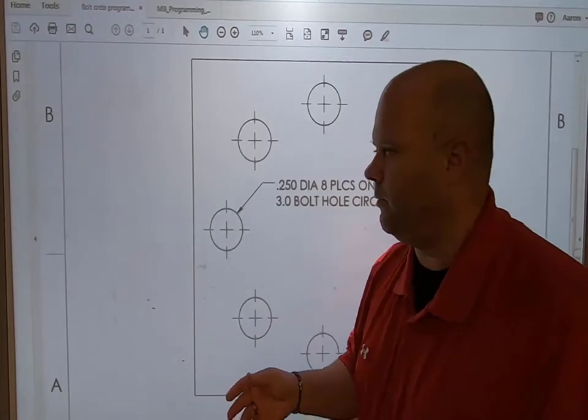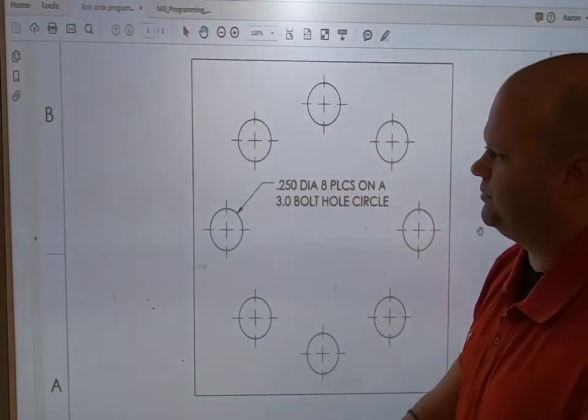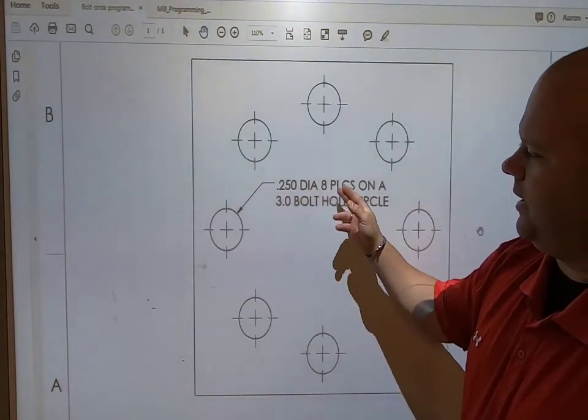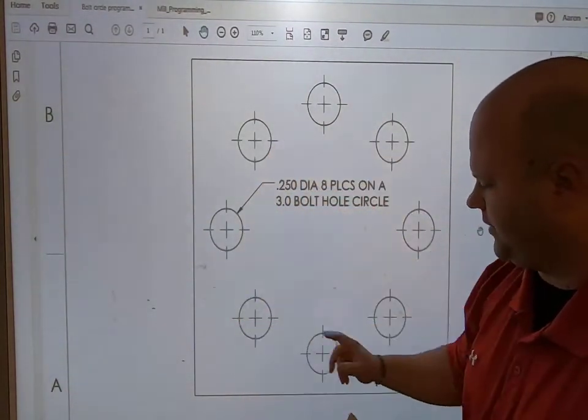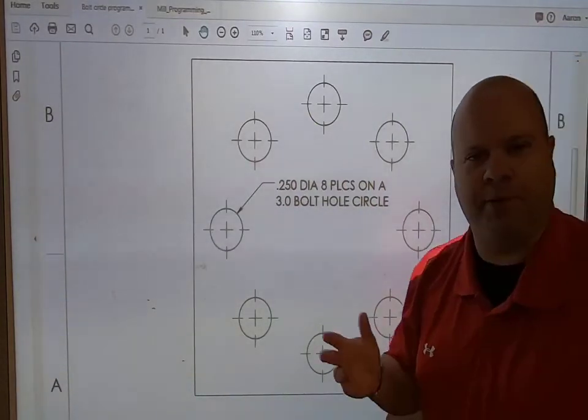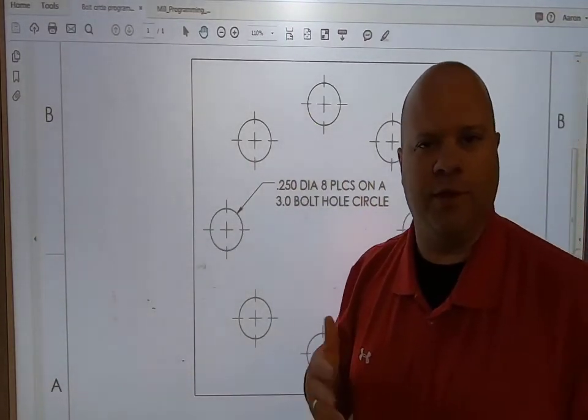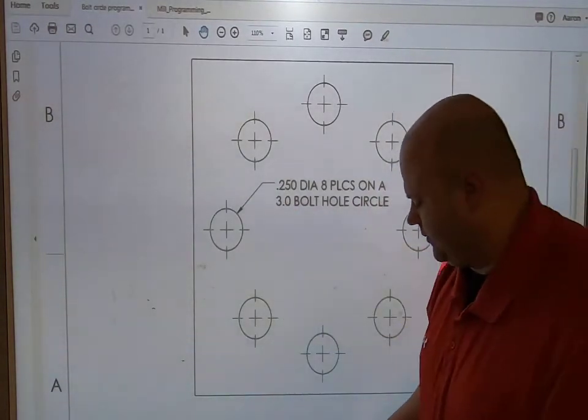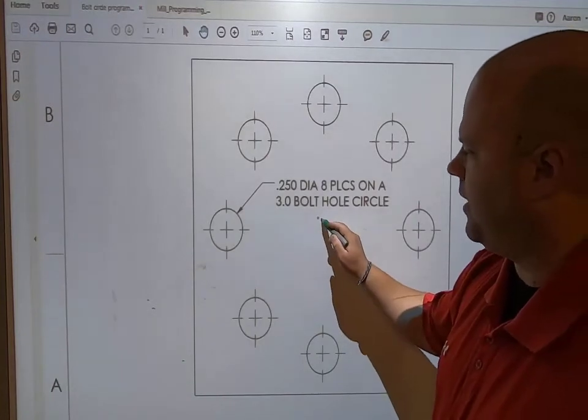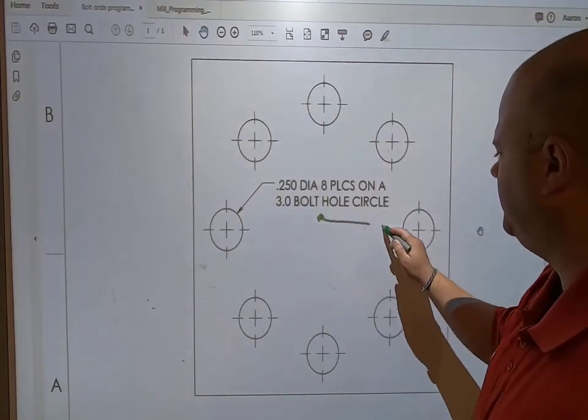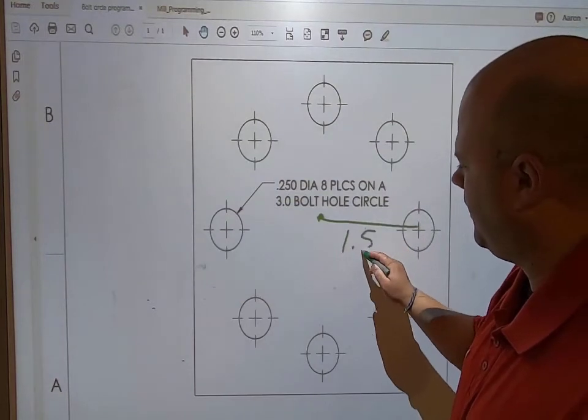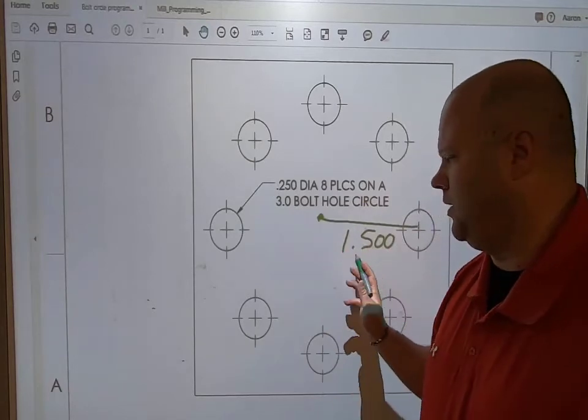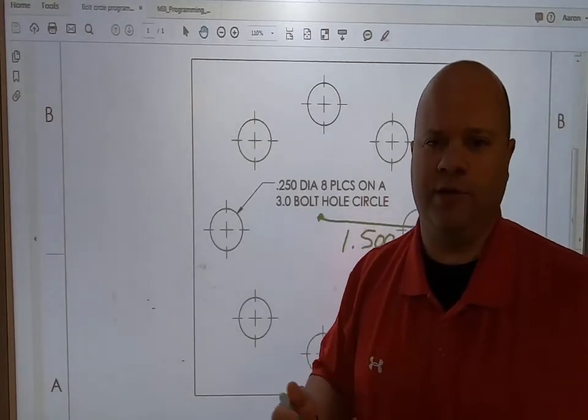First, let's look at this bolt hole pattern. We have a 0.250 diameter, eight places - one, two, three, four, five, six, seven, eight times. It's on a three inch bolt hole circle, which means from center out to the edge is one inch, five hundred thousandths. This is important because it's a number we'll input into our code.